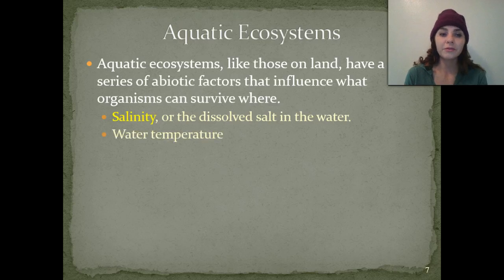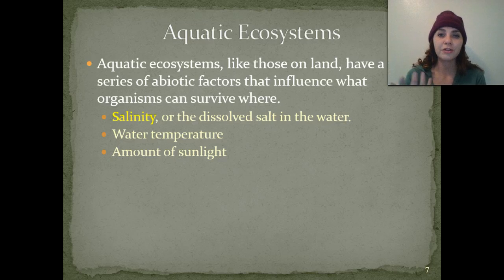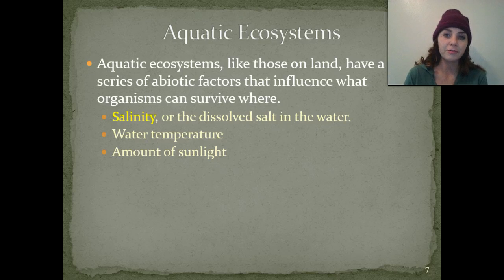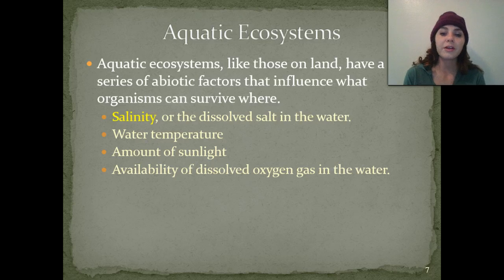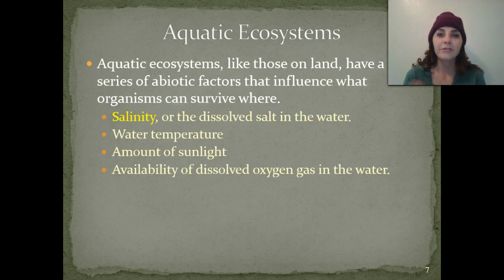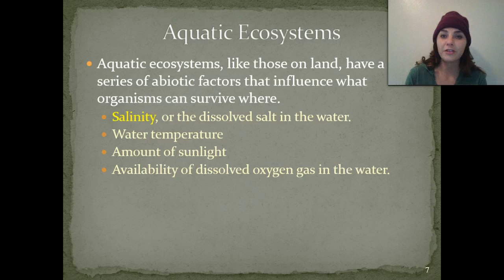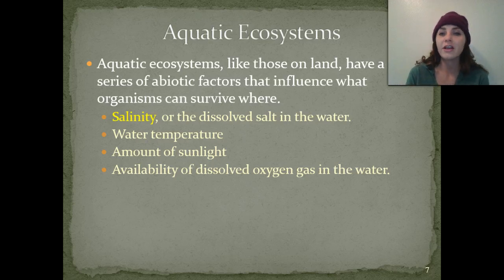We also have water temperature, and the amount of sunlight actually getting through to the zones of the ocean — that's going to affect photosynthesis rates of the different photosynthetic organisms living there. Then we also have the availability of dissolved oxygen gas in the water, which determines what life forms can live where. If there's a low dissolved oxygen content, it's not going to support many life forms — different types of fish need a higher dissolved oxygen content in order to survive.